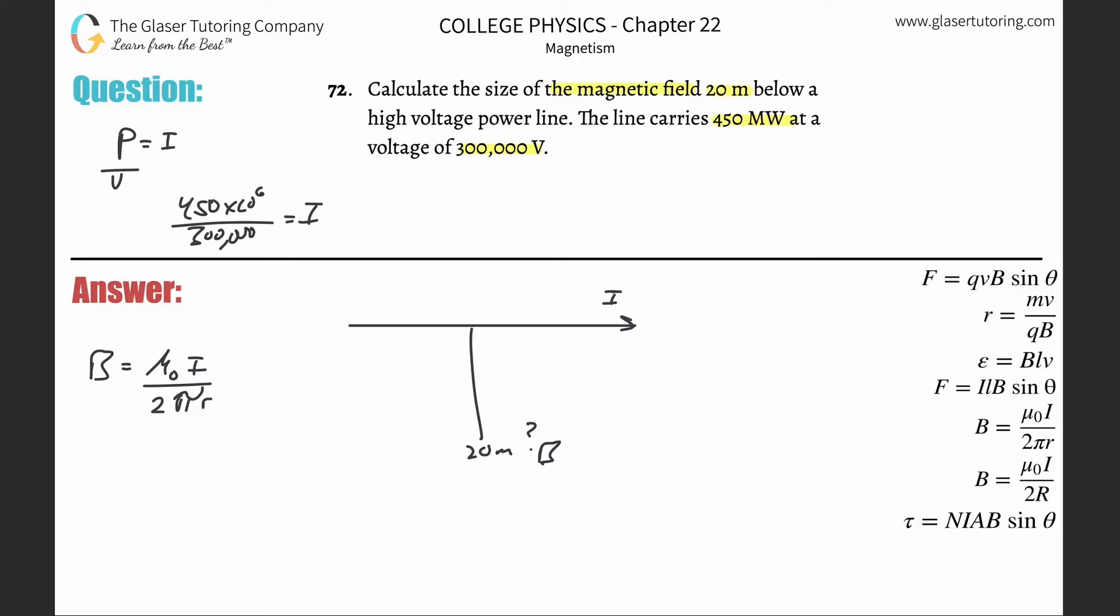And now what you're going to do is plug that all in. So this is permeability of free space, 4π times 10 to the minus 7th, now times the 1500 that you just found, divided by 2π times the distance, which is 20 meters. And there you go.